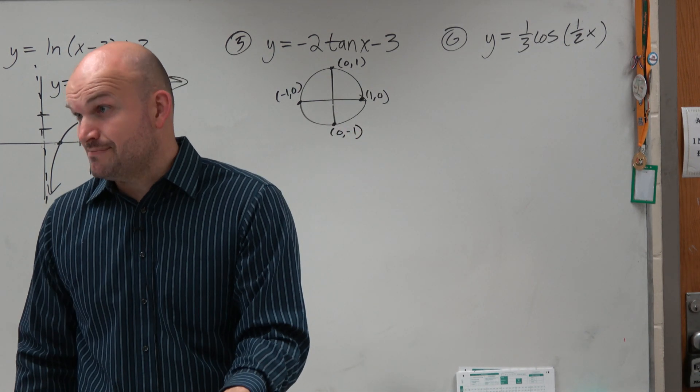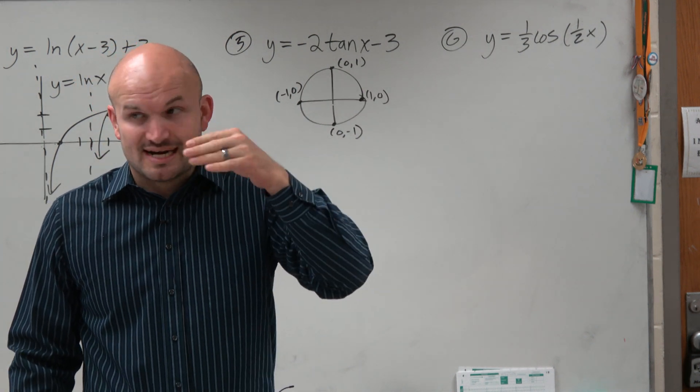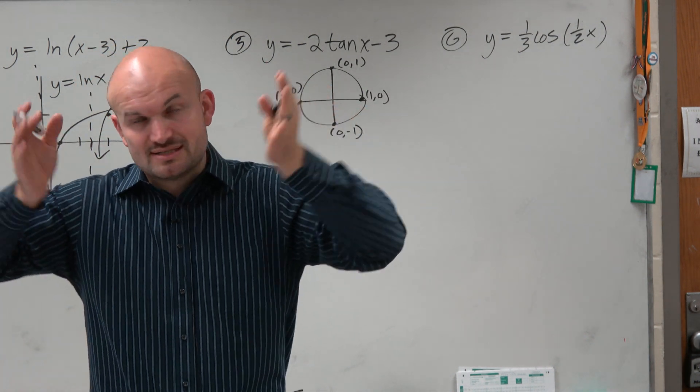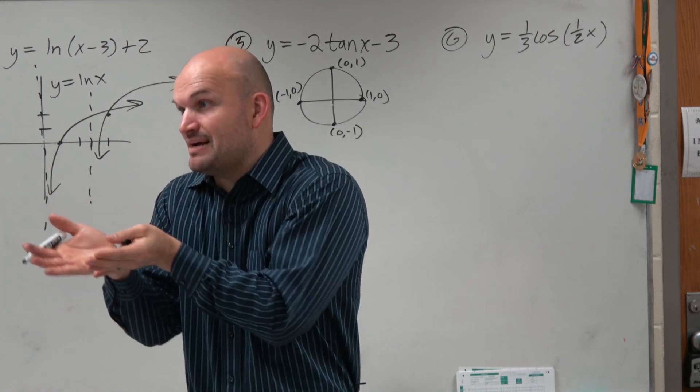And then also ingrained in my memory is tangent is y over x. So I just got to think, well, which? Remember, when something's an asymptote, that means it's undefined, right? You're dividing by 0.